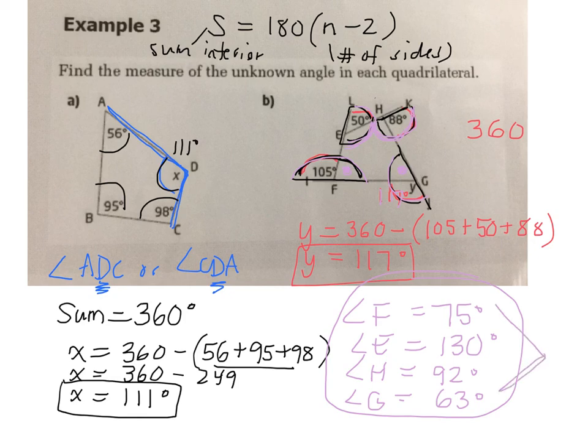If I were to add all of these up, what should they add up to if they're inside the quadrilateral? Good. 360. Can you guys add these up and tell me, does it equal 360? It does? Okay. And it works. So we've solved, we found the measures of all the unknown angles.